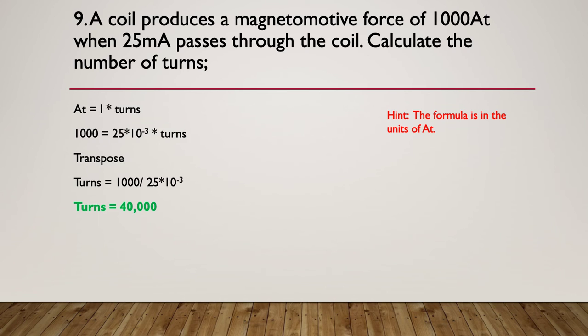Here's the answer. The amp turns equals the current multiplied by the turns, which is what amp turns means. We have a thousand equals 25 times 10 to the minus 3, that's your 25 milliamps, multiplied by the number of turns. You've simply got to transpose the equation. We're saying the number of turns has got to be a thousand divided by 25 times 10 to the minus 3, and that gives us 40,000 turns. Nice and easy to calculate. The trick there being remember that quite often the units are the formula, which they were here.